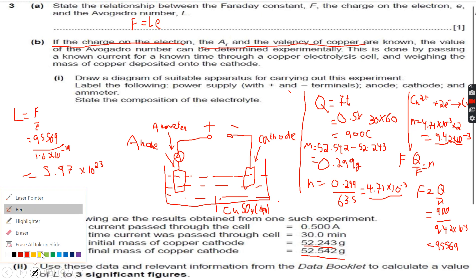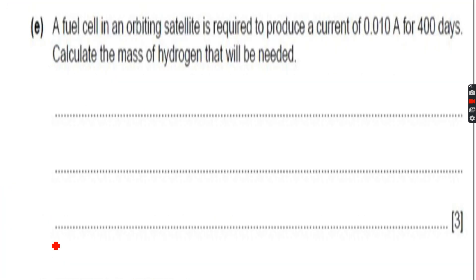We will never get a very accurate value, so this is quite high in terms of accuracy. We have given three significant figures as mentioned. Now let's move forward. This is the last question for quantitative electrolysis. A fuel cell in an orbiting satellite is required to produce a current of 0.010 amps for 400 days.